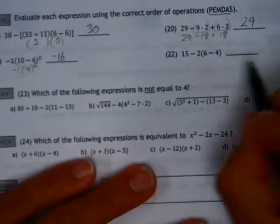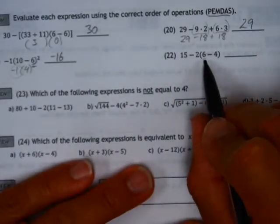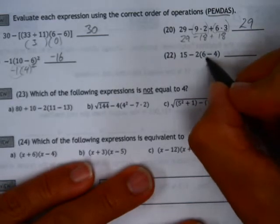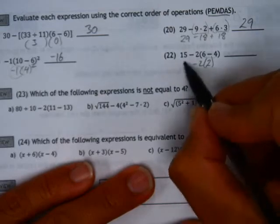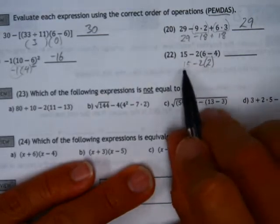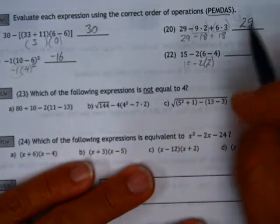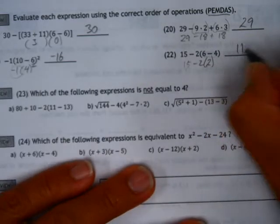And finally, lastly in this section, you start with your 6 minus 4 to get a 2. You've got a 2 out in front, and a 15 out in front of that. So you've got 15 minus the result of this. 15 minus 4 is equal to 11.